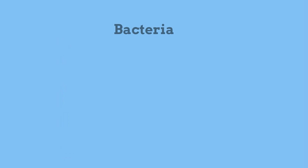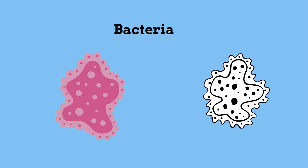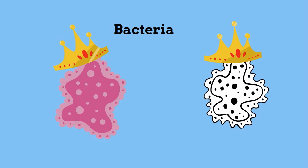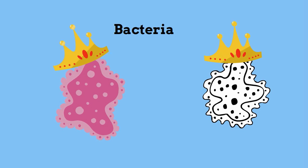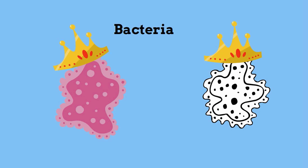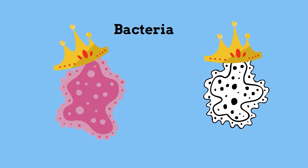Bacteria are tiny organisms and they could be considered the kings of decomposition. Bacteria are found almost everywhere and on every object on planet Earth. They help release important nutrients that living organisms have absorbed and release these nutrients back into the environment, like nitrogen and phosphate.